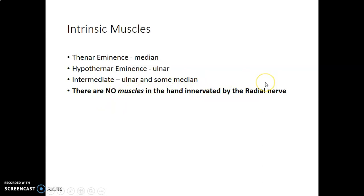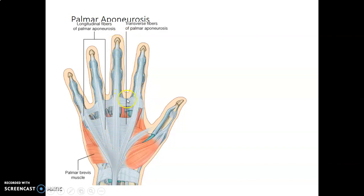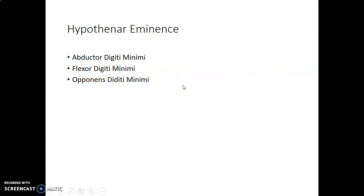There are no muscles in the hand innervated by the radial nerve. The thenar muscles are flexor pollicis brevis, abductor pollicis brevis and opponens pollicis. The hypothenar eminence is made up of muscles to the small digit: abductor digiti minimi, flexor digiti minimi and opponens digiti minimi.